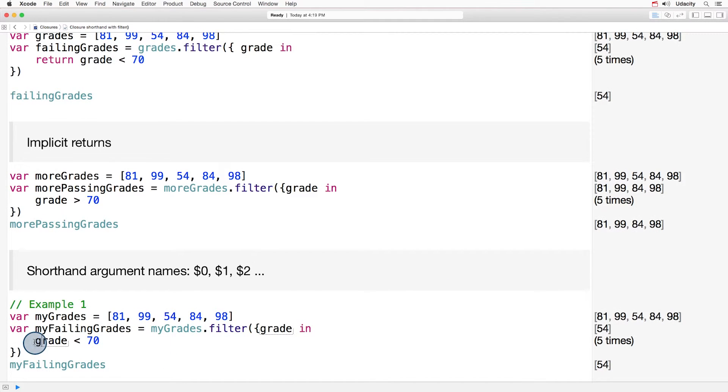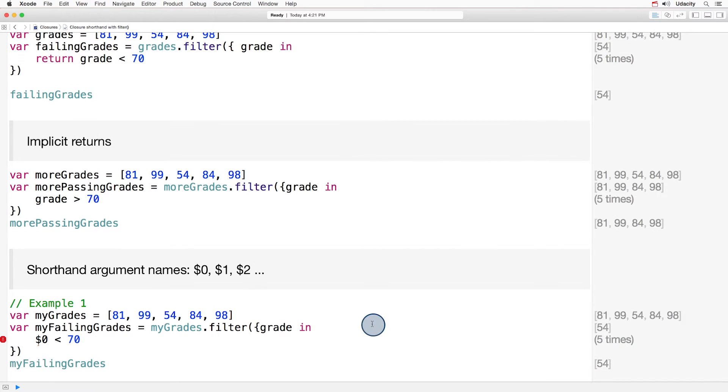So here, for example, we don't have to give this argument a name. We don't have to use the name grade. We can just use the default name for the first argument, $0. And since we're not giving grade a name anymore, we can omit it here as well, along with the word in.